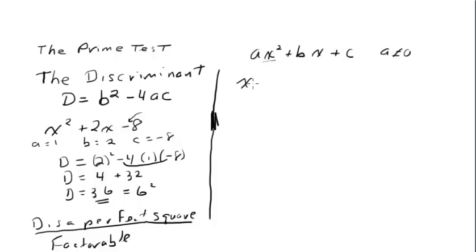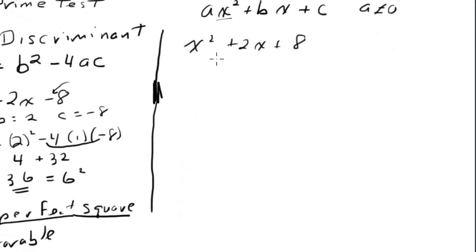So let's take x² + 2x + 8. Now, we know that factors of 8 don't add up to 2. We should already know that this is prime, but let's prove it. So, again, a is equal to 1, b is equal to 2. In this case, c is equal to positive 8.